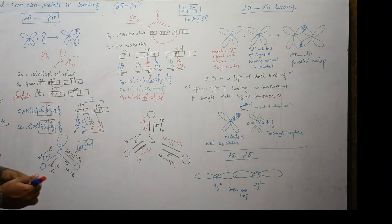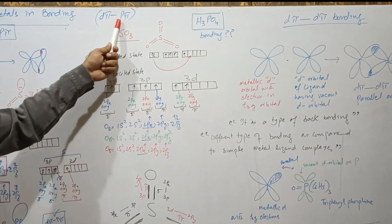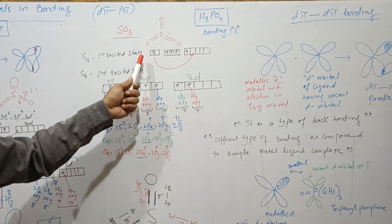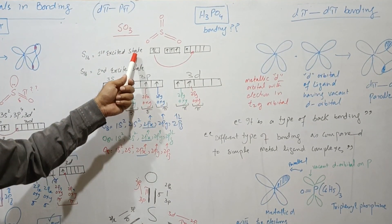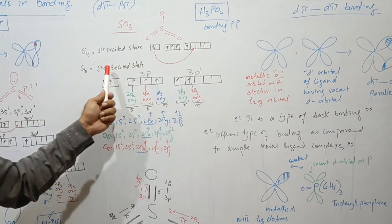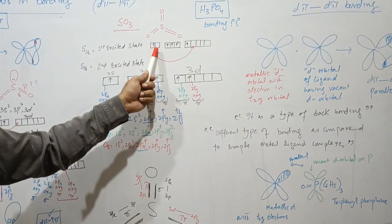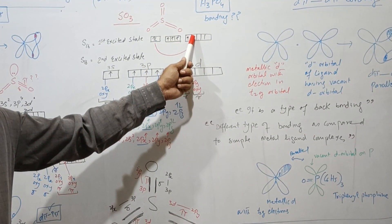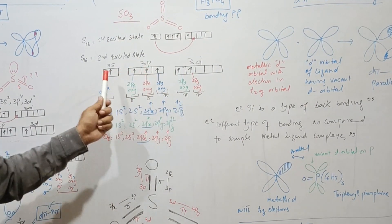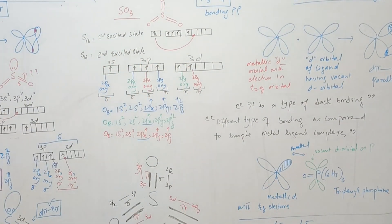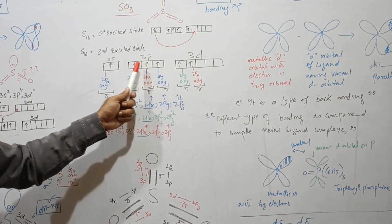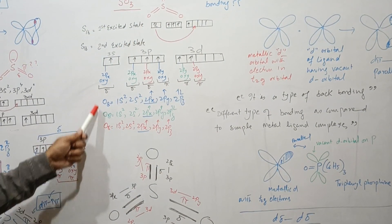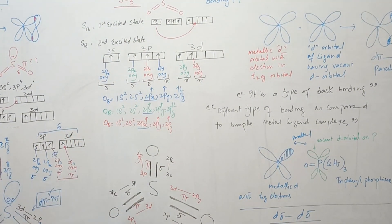Another example of the dπpπ system is sulfur trioxide (SO3). Starting from the first excited state of sulfur discussed earlier, in the second excited state one more electron from the 3s orbital jumps to the second vacant 3d orbital of sulfur, giving six unpaired electrons. In SO3 there are three oxygen atoms and the electronic configuration of oxygen is given.